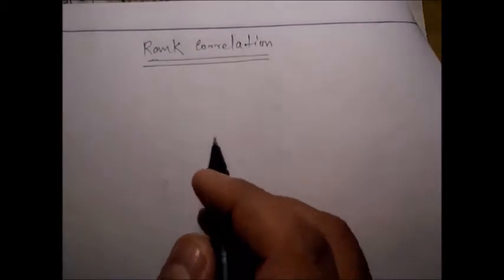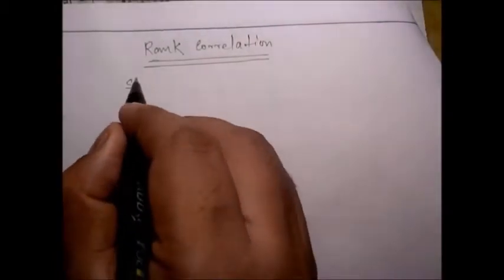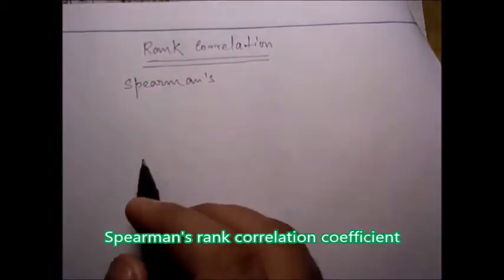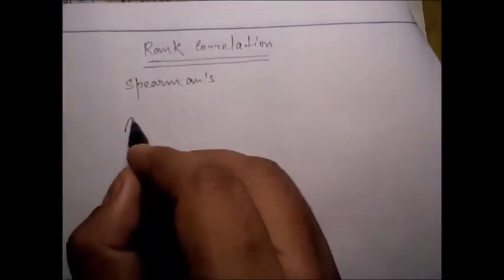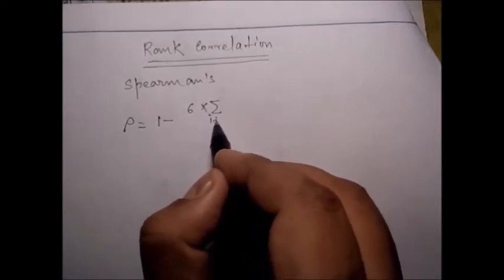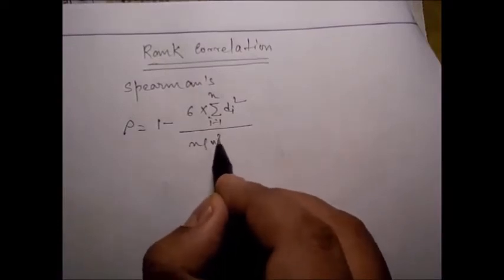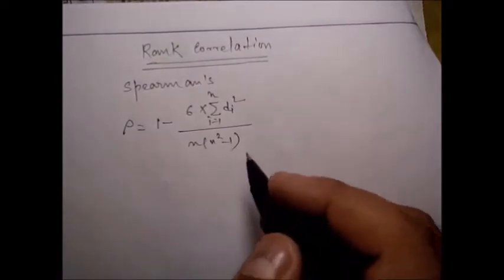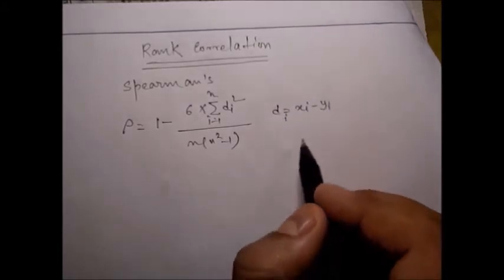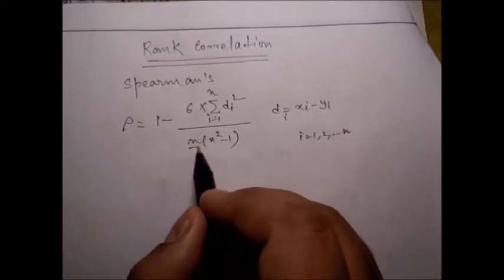Spearman's rank correlation coefficient. The formula is: rho equals 1 minus 6 times the summation of d-squared divided by n times (n-squared minus 1), where d equals x_i minus y_i, for i equal to 1 to n, and n is the number of pairs.